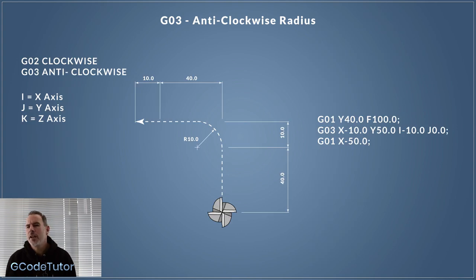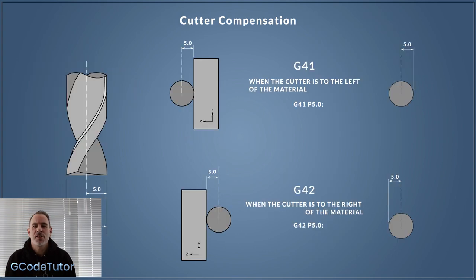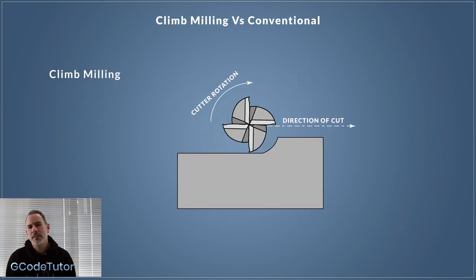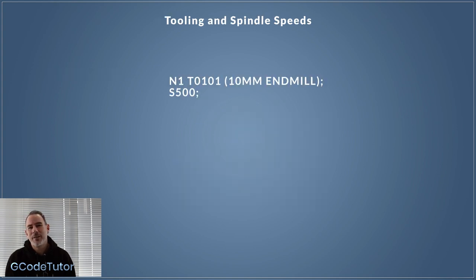We also cover subjects such as cutter compensation using G40, G41 and G42. We look at climb milling versus conventional milling, how to set our units, and how to set our tool numbers and speeds.